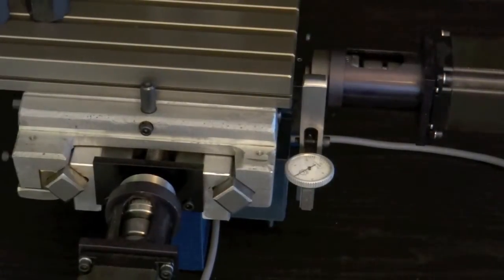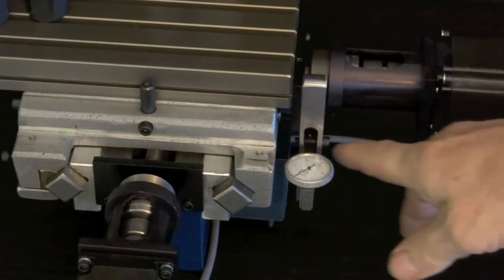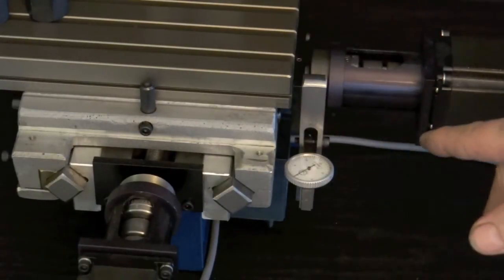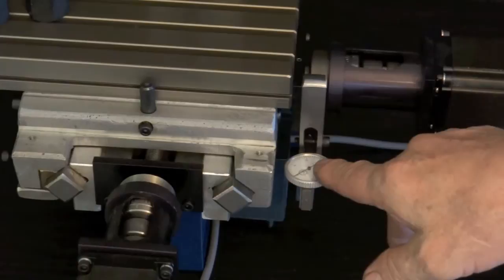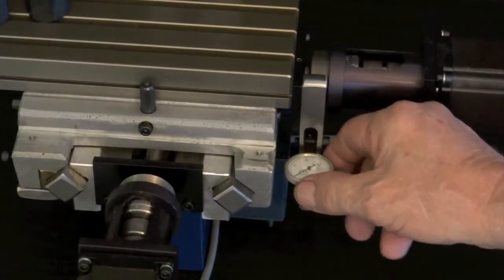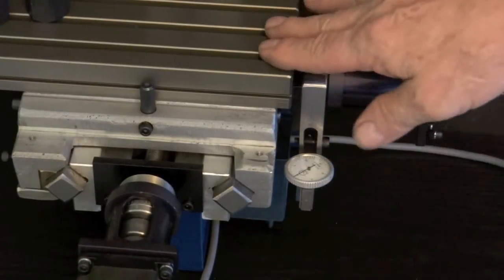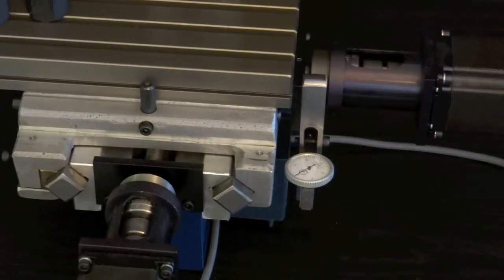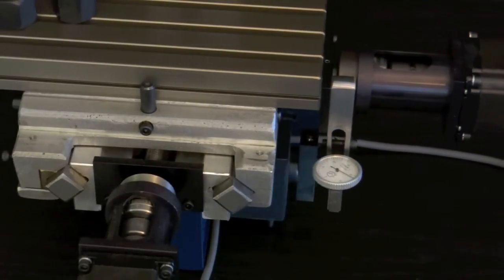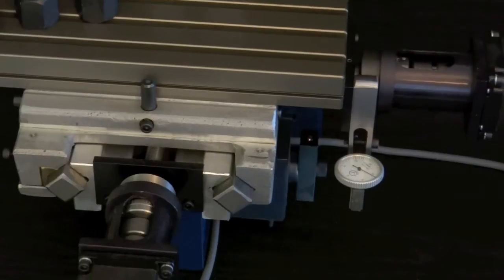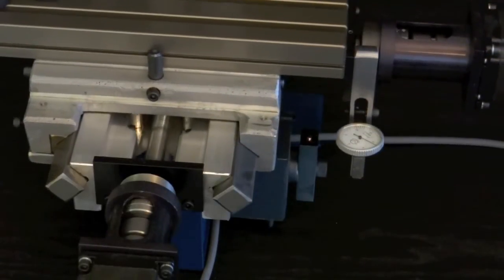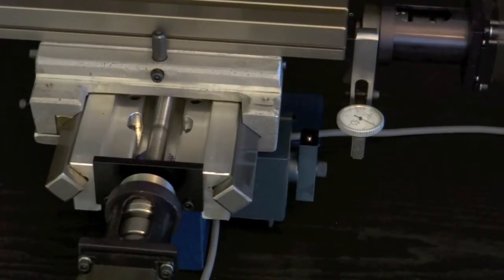I would have to X zero, Y zero the part and so on and so forth. So I put this in here so that this is where home is all the time. Here it's set to zero, and it's an indicator that sits on the X axis.